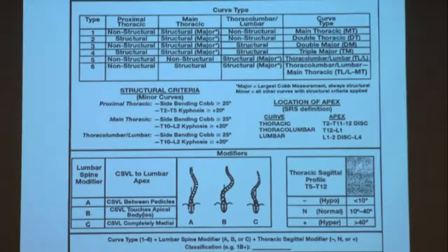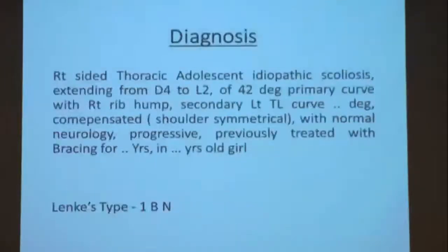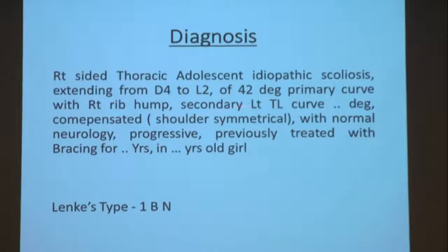Lenke classification is more accepted and tells you the deformity in two dimensions. It also gives rough guidelines for surgical levels — from where to where to include — for example, whether to go from D1 to S1 or stop somewhere to retain mobility. The criteria include: how many curves, what level, which is the structural master curve, the lumbar modifier (related to CSVL), and the thoracic sagittal modifier — normal kyphosis, hypo, or hyperkyphosis. If you have a scoliosis case, this is what you need to present.